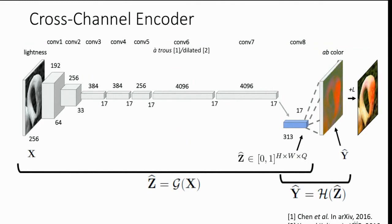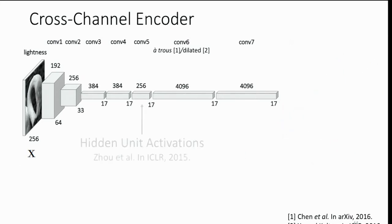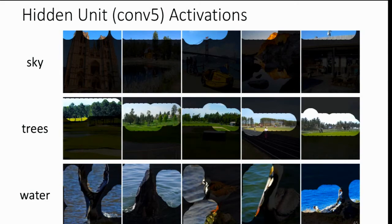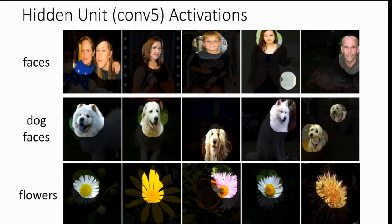We wanted to peel away at the internals of the network and see how it was solving the colorization task. One way that we can qualitatively get at this is look at the images that maximally activate certain hidden units within the network. This is a technique that was presented in ICLR 2015 by Balezo. What we see is that in one of the internal layers, many of the units correspond to thin categories such as sky, trees, and water, and there are other units that correspond to more thin categories such as faces, dog faces, and flowers. Note that the network was able to discover these units without the aid of any kind of supervised data or hand-curated labels. It was able to find this just by training for the task of colorization itself.